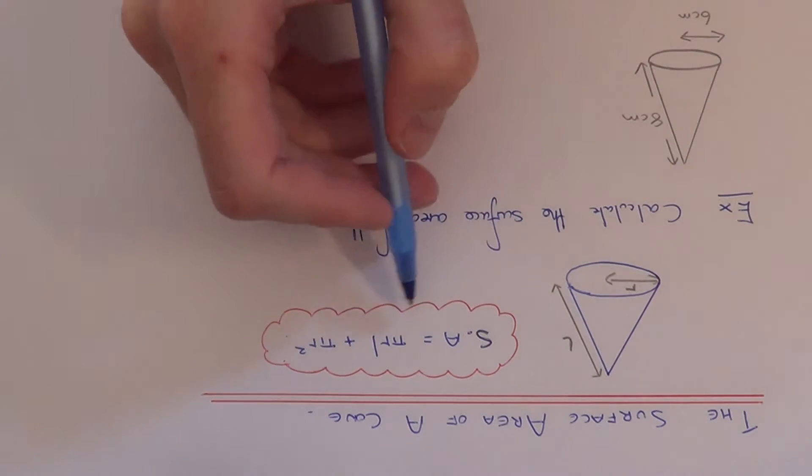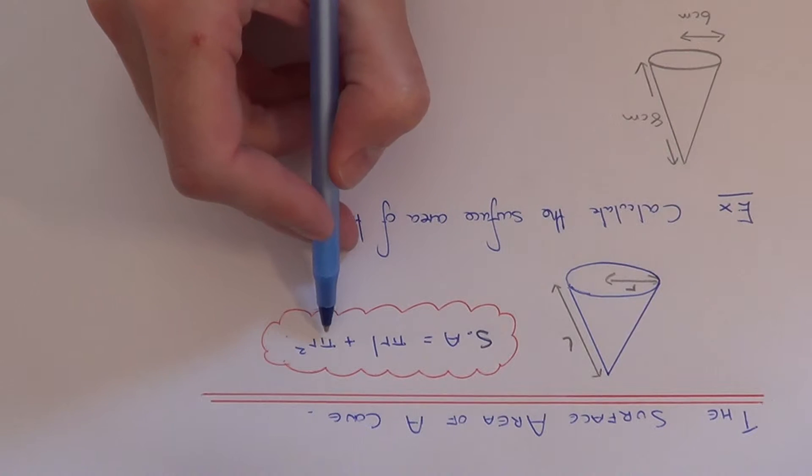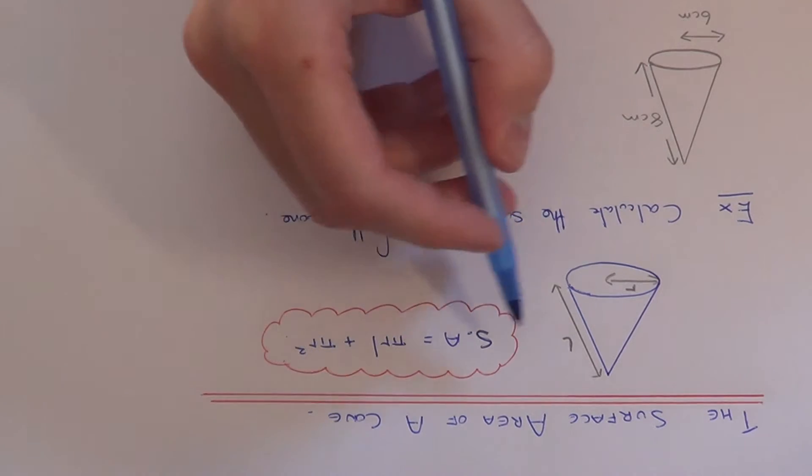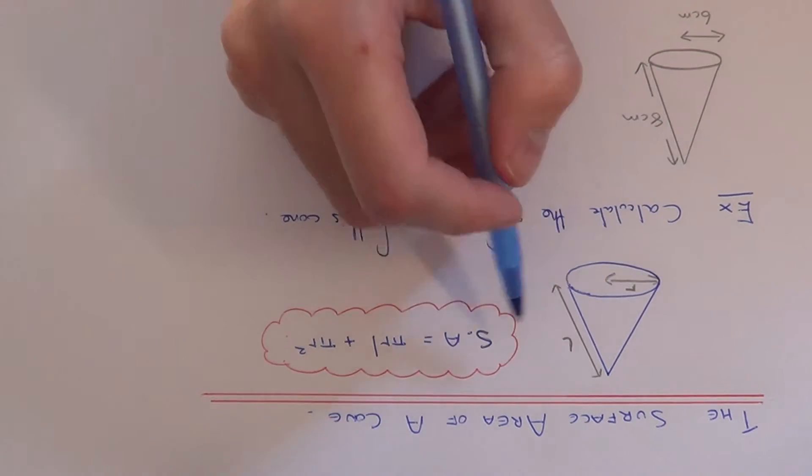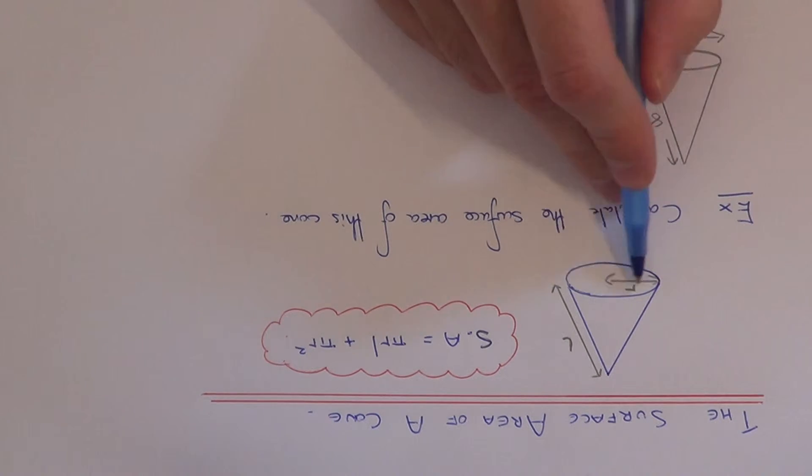So the formula that we need to use is pi times R times L plus pi R squared. So this bit will give you the area of the top of the cone, and this will give you the area of the circle at the bottom of the cone.